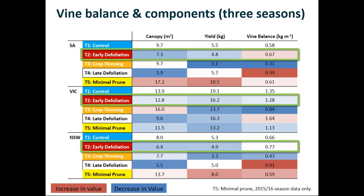The next treatment is the crop thinning treatment. As you would expect, we've not directly impacted the canopy size - the slight differences at the Victorian and New South Wales sites are not statistically significant, giving you an idea of the natural range observed. On the other hand the yield data is very much in the blue, and what that gives us is a vine balance which is much lower than the control - we have less fruit per unit canopy size.